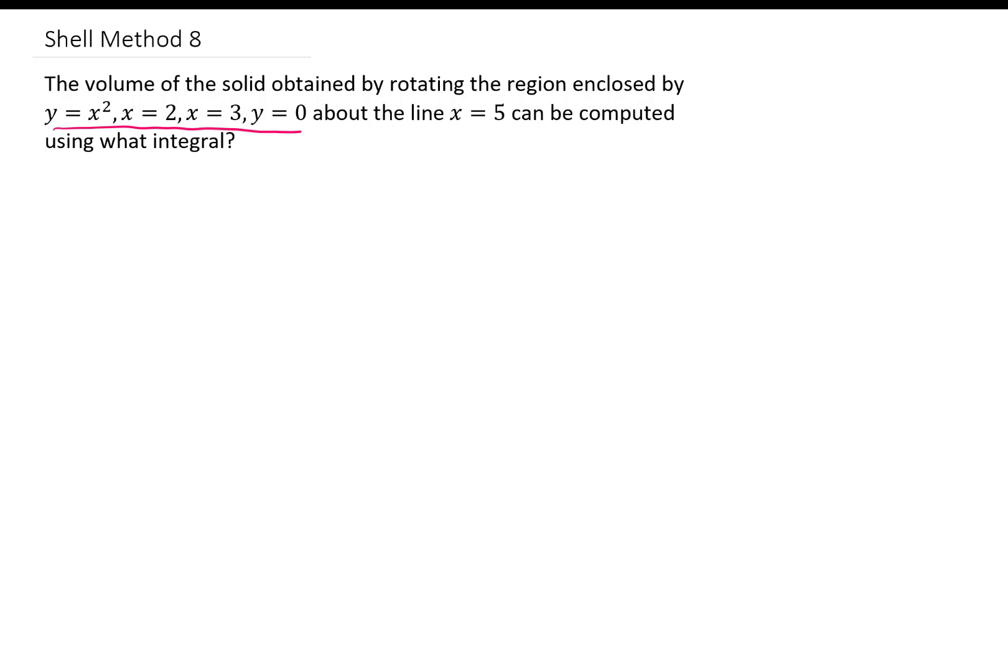All right, we're going to take a look at this region here, and we're going to rotate that region around the line x equals five. Now x squared is just a parabola. We'll say it looks something like that. x equals two is here, and x equals three is here. y equals zero is just the x-axis. So the region in question looks like that.